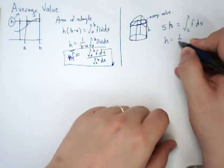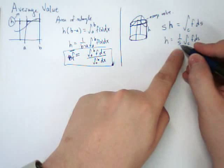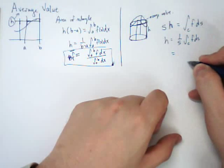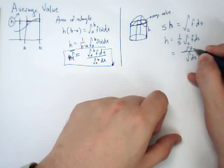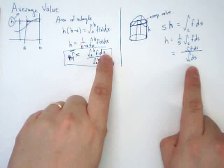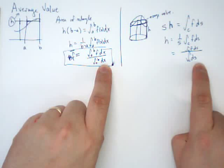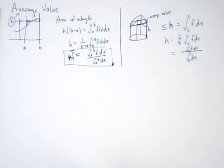So if I solve for H, it's 1 over S, integrate F DS. Or, the way we get the arc length is we just add up little bits of arc length. So I can take F DS and divide by DS. Notice the similarities. All we did was we changed the X to an S. And now we can do the exact same thing over functions in high dimensions.